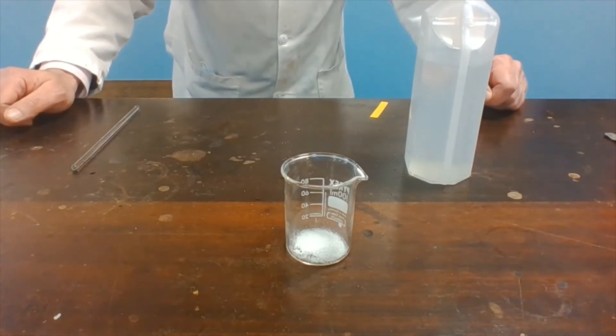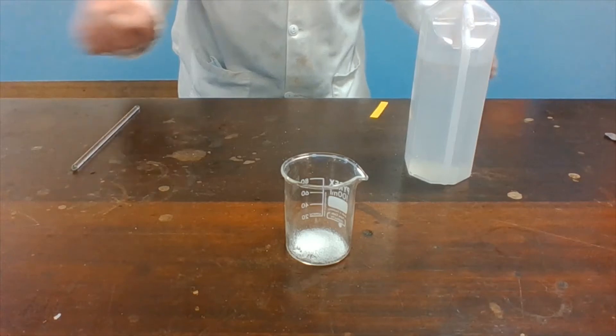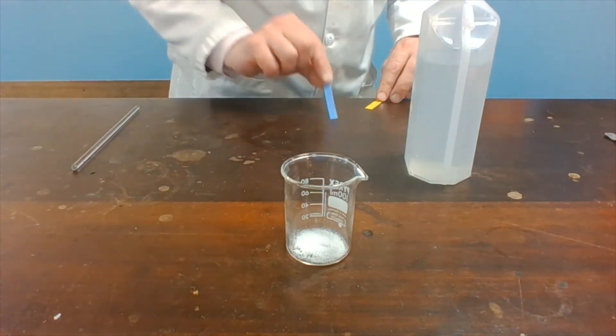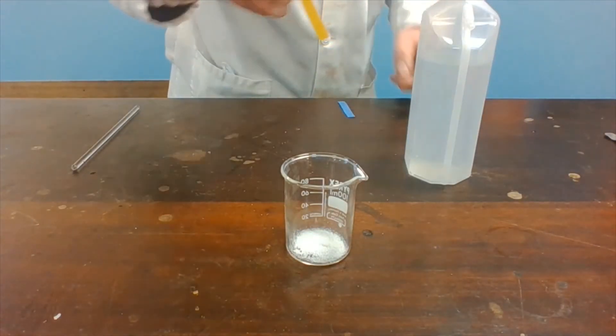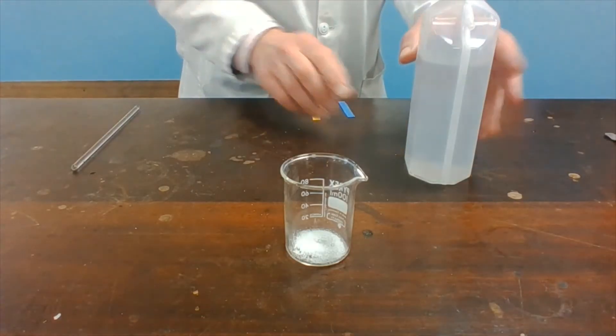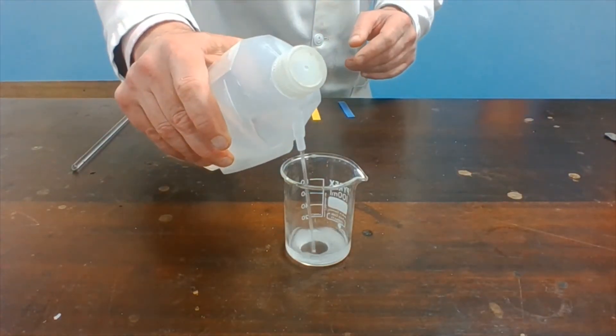At the end of the last video, I forgot to show you that the citric acid solution does, in fact, affect indicators. Remember, the solid citric acid has no effect on the litmus paper or the universal indicator paper. If I dissolve the citric acid solid in water.